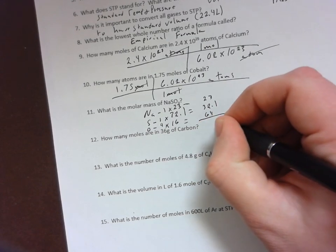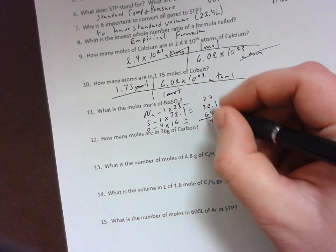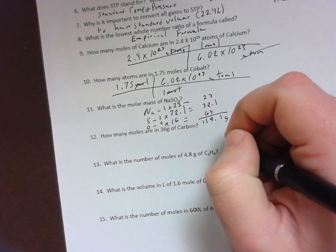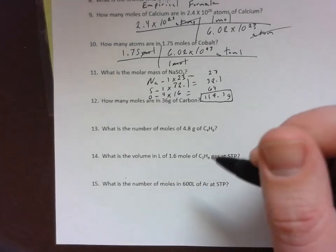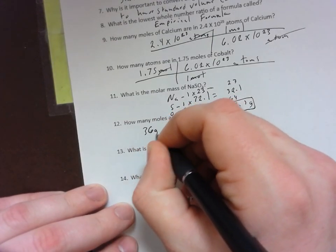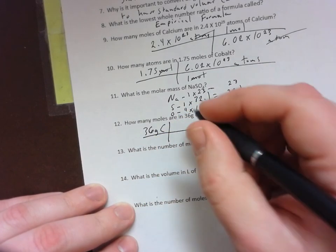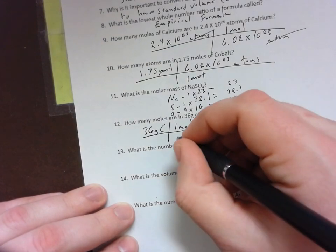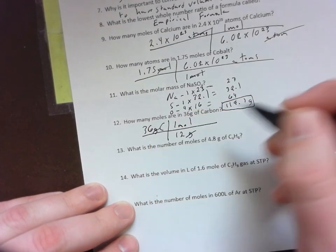How many moles are in 36 grams? I have 36 grams of carbon, so I know that I'm trying to go to moles. Carbon has a mass of 12 grams, so I'm going to cancel out those and then give me my answer, which should be 3 moles.